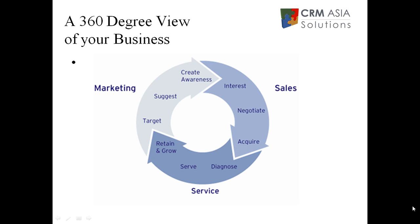Zoho CRM is designed as a 360-degree view of your business. You use it to segment your contacts based on various criteria — for example, region, interests, age — and target those people through mass mailing, also doable in Zoho CRM. Suggest new products via attractive email templates, create awareness and generate interest. Capture the leads via the web-to-lead function on Zoho CRM, so when they use your contact us form, they go straight into the CRM. Sales use the workflow process to negotiate and win the sale, and then support teams use the cases and solutions module to support the customer, diagnose problems and fix issues.